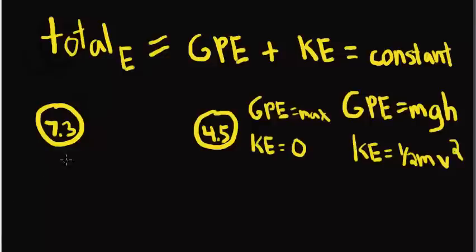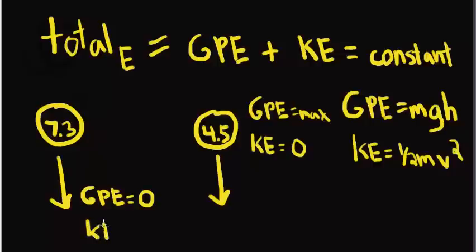Now, once the balls start to fall, they transfer energy from potential energy to kinetic energy. Therefore, at the bottom, their gravitational potential energies are equal to zero because their height is zero, and their kinetic energies are max because their velocities are at their max.